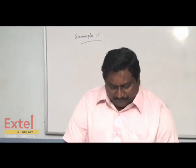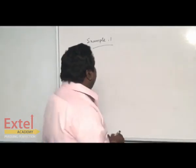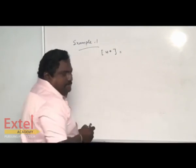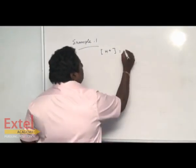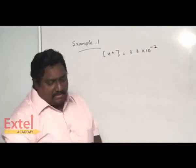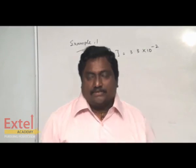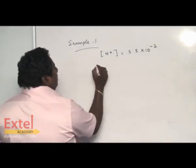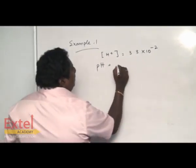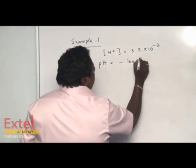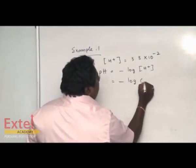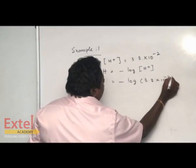The hydrogen ion concentration of a fruit juice is given. H⁺ concentration is 3.3 into 10 to the power of minus 2. What is the pH of the juice? The pH has to be calculated. You know that pH is nothing but minus log of H⁺. That is minus log of 3.3 into 10 to the power of minus 2.